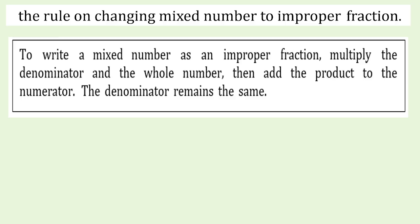The rule for changing a mixed number to an improper fraction: multiply the denominator and the whole number, then add the product to the numerator. The denominator remains the same.